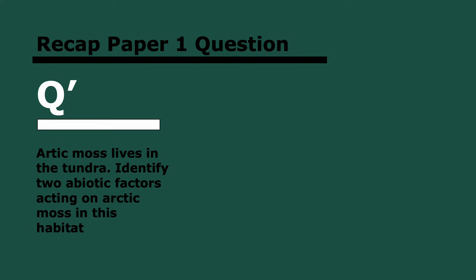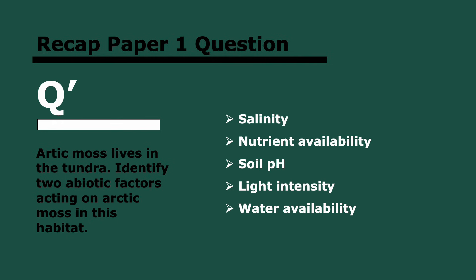Here are some paper one questions. First: Arctic moss lives in the tundra — identify two abiotic factors acting on Arctic moss in this habitat. You need to give two answers for full marks; the answers were covered in the slides earlier.